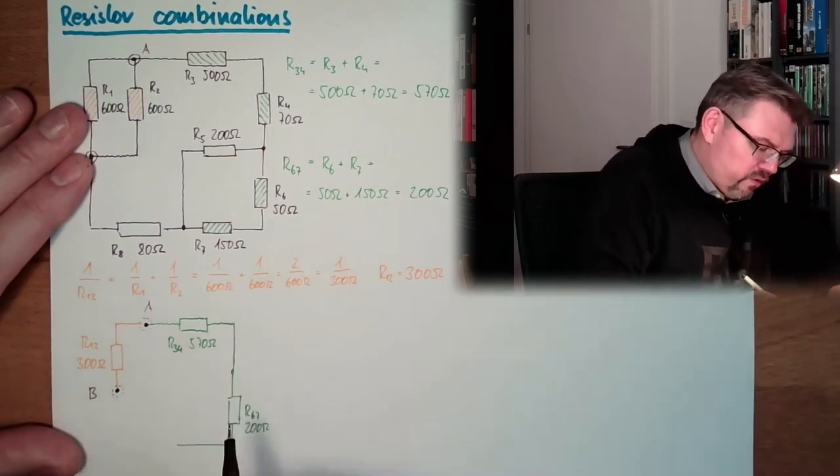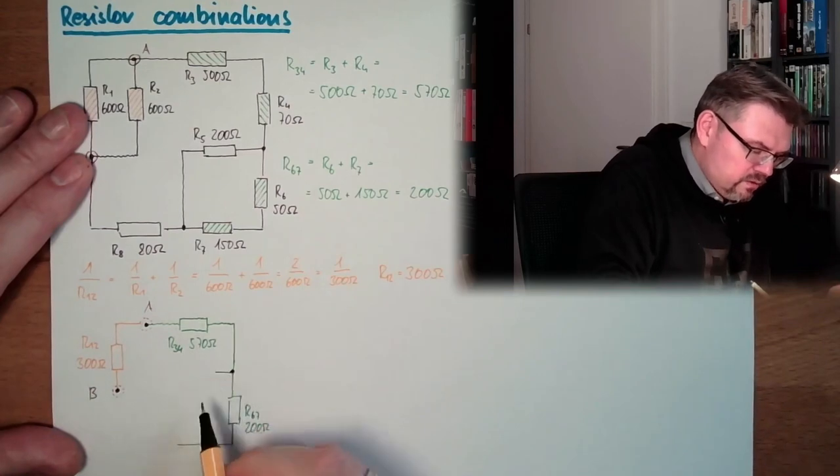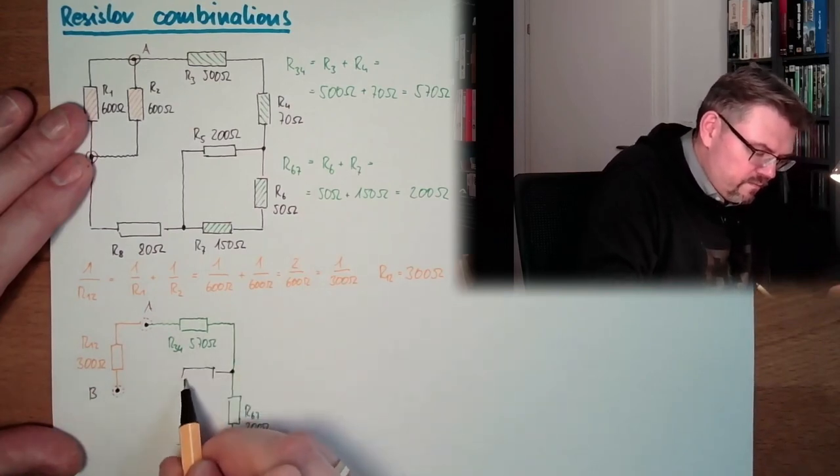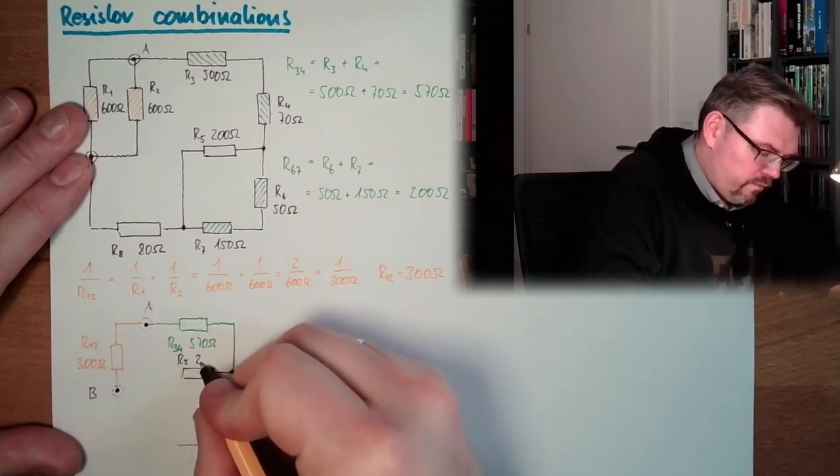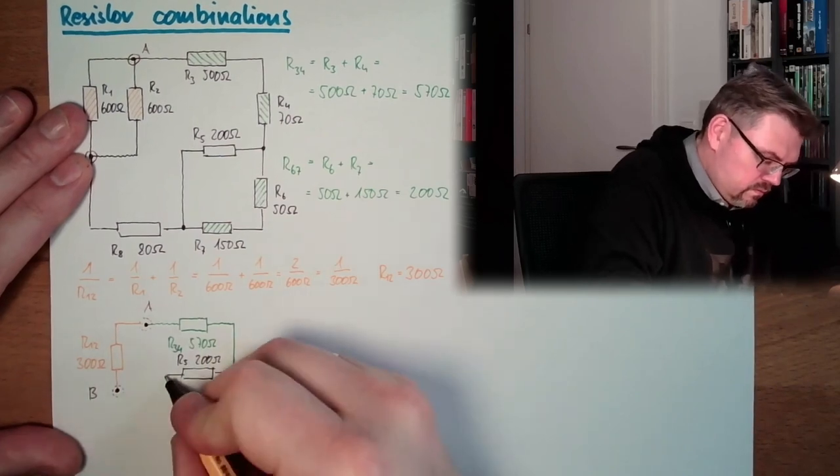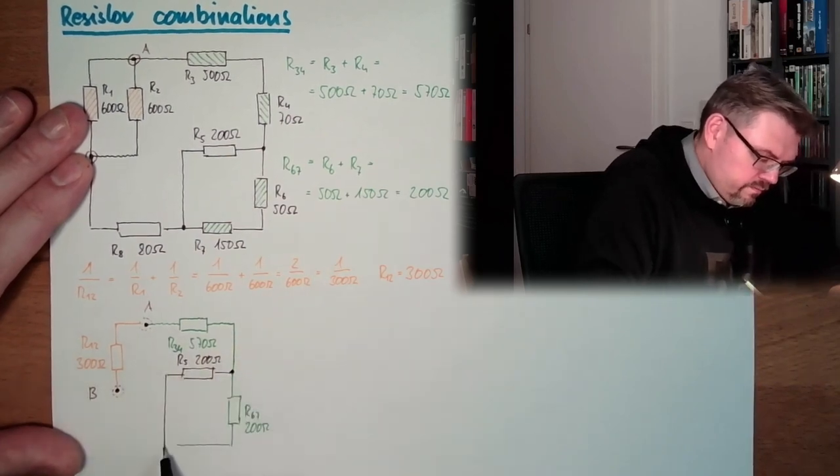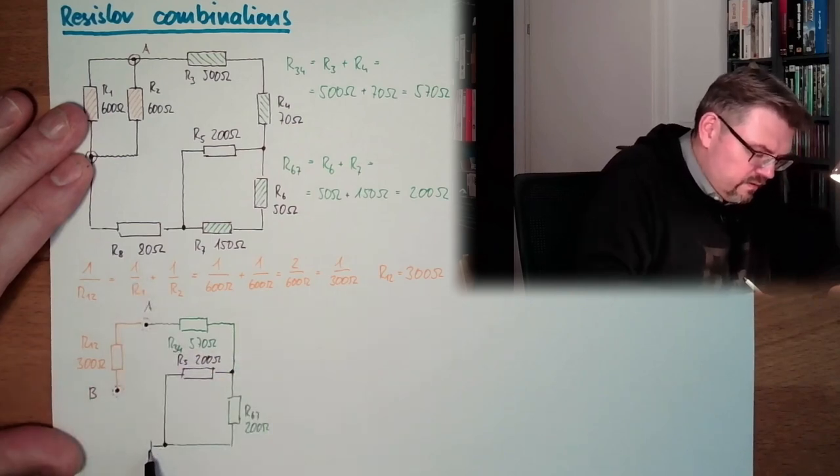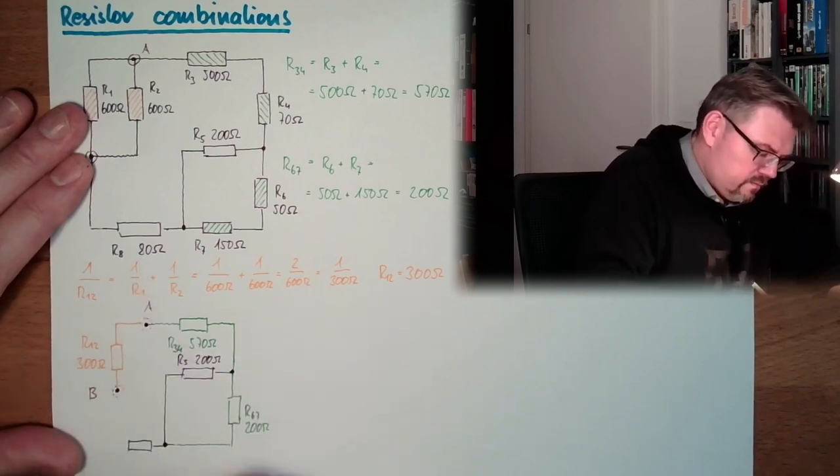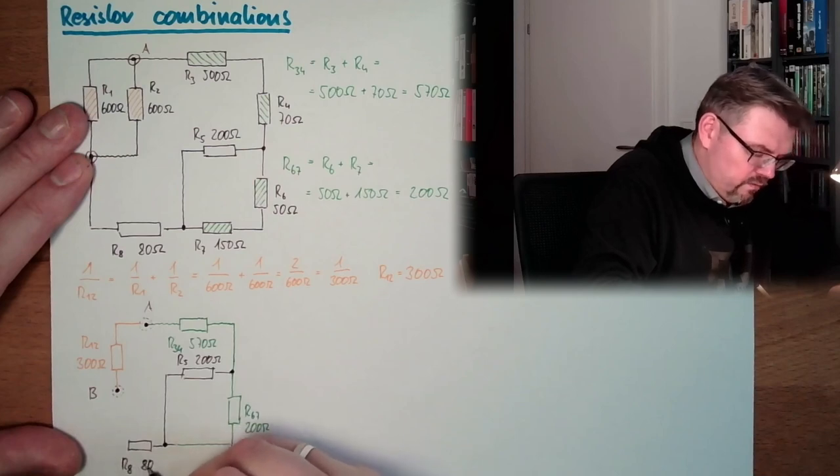We are replacing this resistor here, R67, which was 200 ohms. This one we have not touched, it's still the same. So here we have still this R5 with 200 ohms. And here we have still this R8 with 80 ohms.